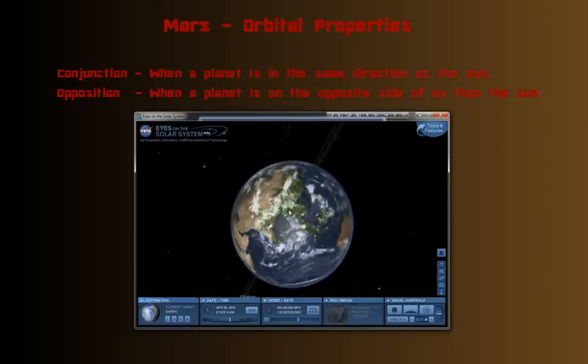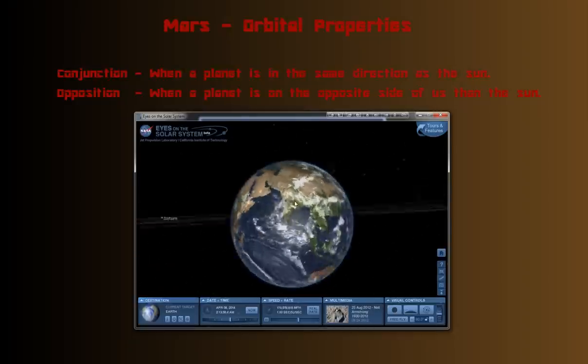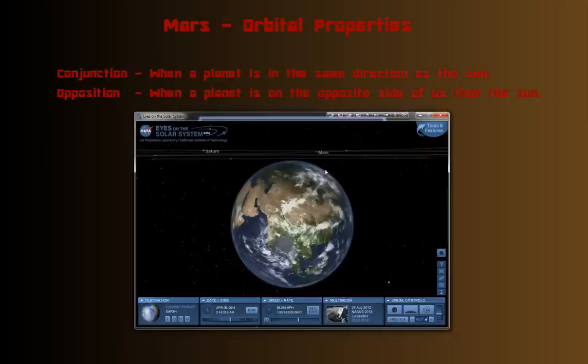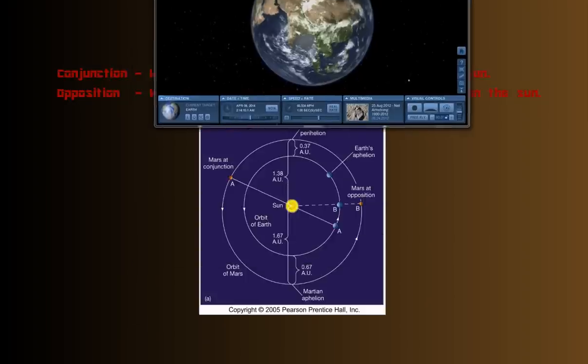So you might get dizzy again. I'm going to flatten up the solar system. There we go. So yeah, Mars is up at night, and the Sun is behind us now. So that's opposition when a planet is on the opposite side of us than the Sun.